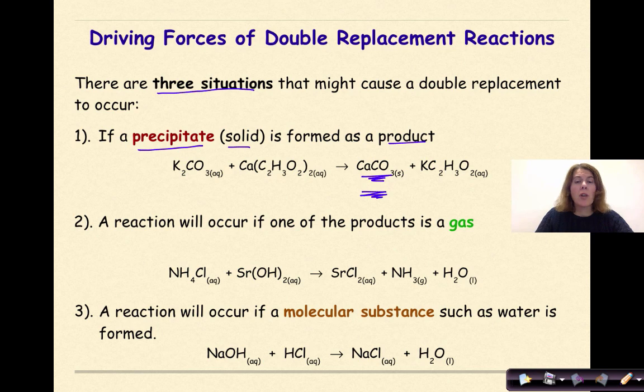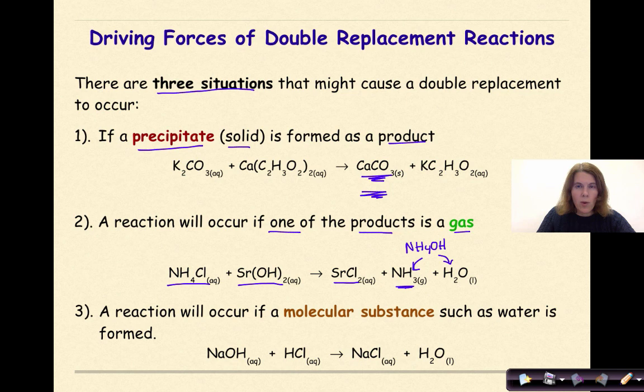A double replacement reaction will also occur if one of the products is a gas. So here we have NH4Cl reacting with Sr(OH)2. The products are SrCl2, and then we would be forming NH4OH. But that's really unstable. This is so unstable that it actually automatically breaks down into water and ammonia. And that production of ammonia, that NH3 gas, will drive the reaction forward. So the production of a gas will also make this type of reaction happen.